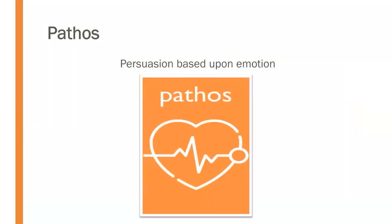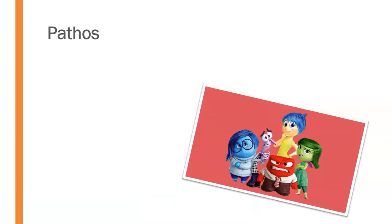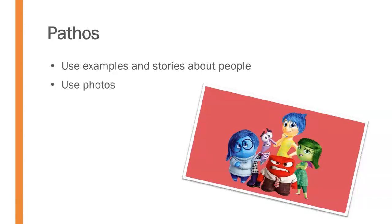We also need to consider the persuasive appeal based on emotion, which is what we call pathos. To develop pathos effectively within a persuasive speech, we can use examples and stories about people that connect the idea to the audience and place it in a real-life context. We can use photos because they speak strongly to the heart. And we can use emotive language, selecting our words carefully in a way that elicits a particular emotion.